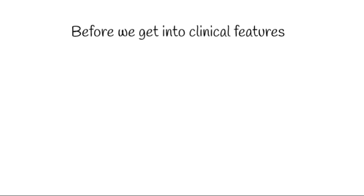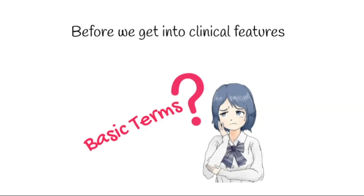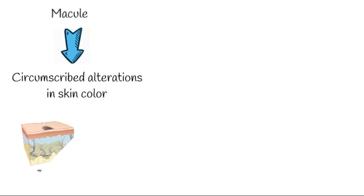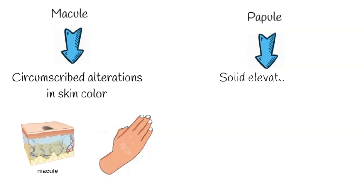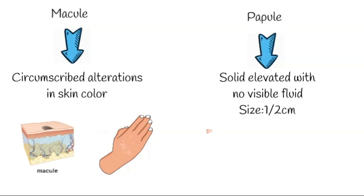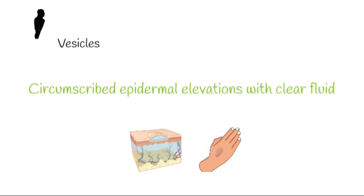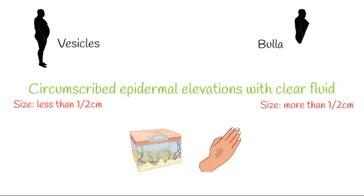Before we get into the details of the clinical appearance of lesions seen in erythema multiforme, let's quickly review some basic terms related to skin lesions. Macules are circumscribed alterations in skin color; the skin surface is neither elevated nor depressed. Papules are solid elevated lesions with no visible fluid, up to half a centimeter in diameter. Vesicles are circumscribed epidermal elevations containing clear fluid, less than half a centimeter in diameter. Lesions greater than half a centimeter are called bullae; vesicles and bullae are collectively referred to as blisters.